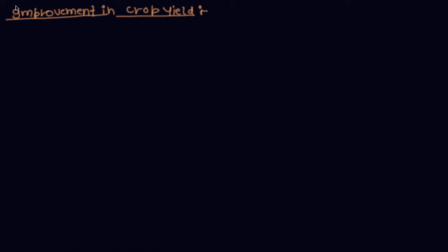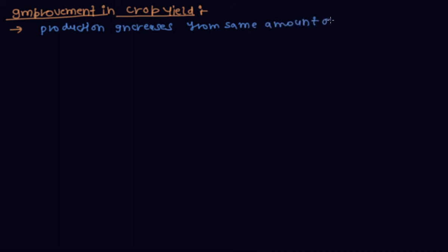Today I discuss improvement in crop yield. Yield improvement means production increases from the same amount of land in the same period of time.